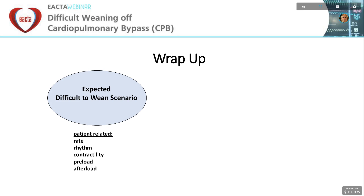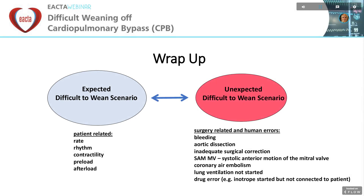Furthermore, the cardiovascular stability of the patient during induction and during maintenance of anesthesia provides important information. And then there are unexpected variables which can make the weaning of cardiopulmonary bypass difficult, such as surgery-related factors — for example, bleeding, unexpected regurgitation, or SAM, systolic anterior movement of the mitral valve. In addition, human errors can also be a cause for unexpected difficult weaning, such as not ventilating the lung or drug errors. But as experienced team members, we do actually expect these unexpected reasons for difficult weaning, and I would therefore call this the expected unexpected difficult to wean scenario.